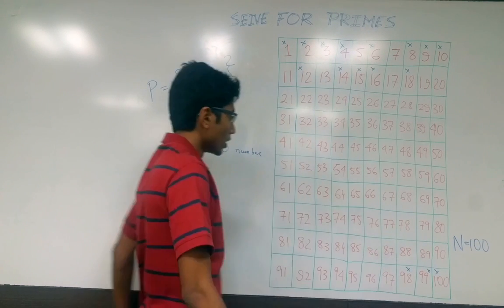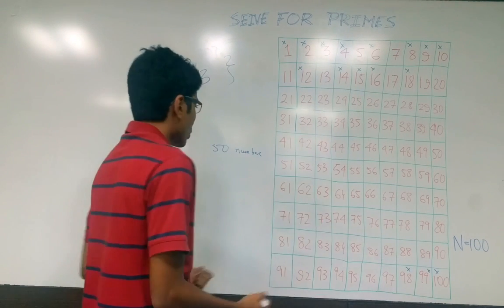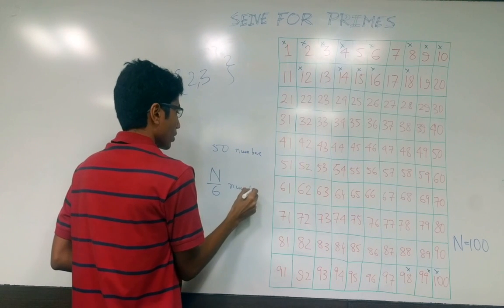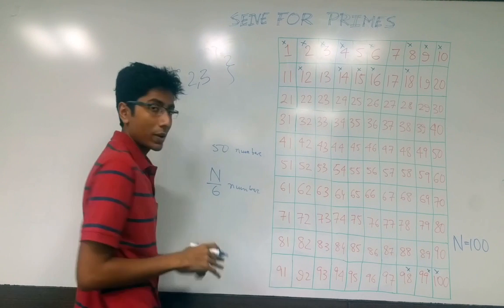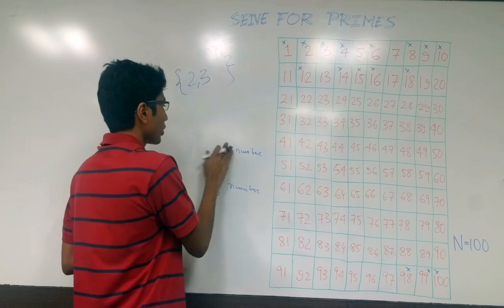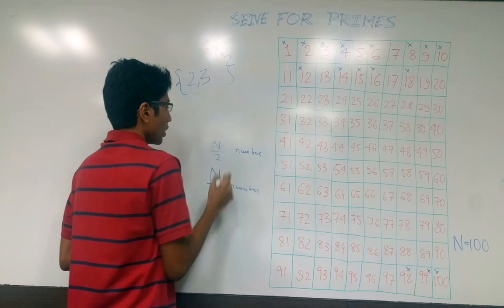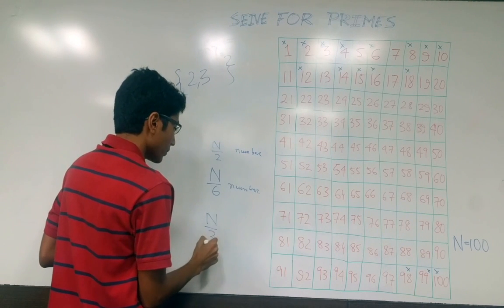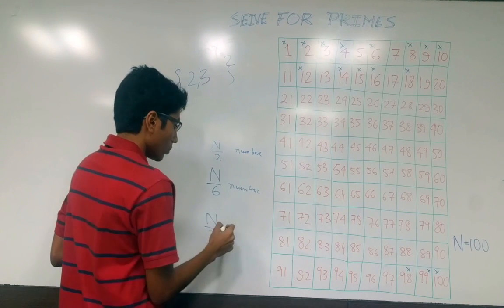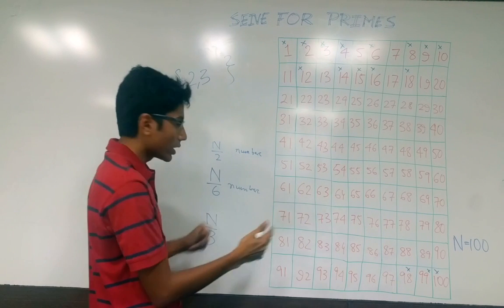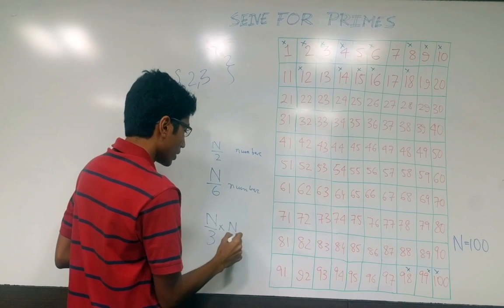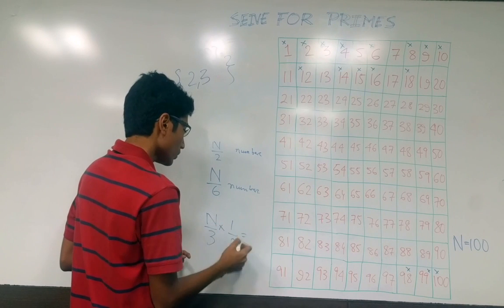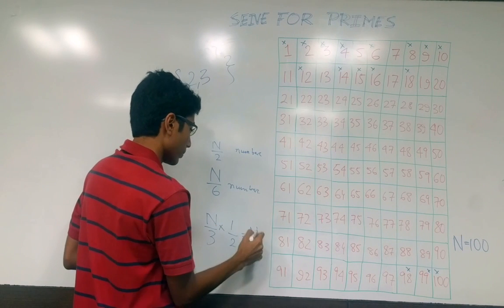This marks about n/6 numbers. The step for 2 marked about n/2 numbers. Why n/6 for 3? Because you should have marked n/3 numbers, but half of them were already marked by 2, so you only mark n/6 new ones.